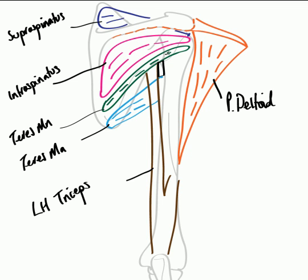We can see that superiorly the quadrangular space is formed by teres minor, inferiorly by teres major, medially we have the long head of triceps, and laterally we have the surgical neck of the humerus. Let's go over those boundaries once more: superiorly teres minor, inferiorly teres major, medially the long head of triceps, and laterally the surgical neck of the humerus. This creates the quadrangular space.